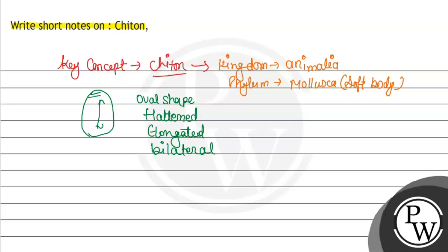This is a bilateral symmetry. On the top, it is a dorsal shell. Like a snail, it is a dorsal shell that is made by calcareous plate. So it is hard. This is the shape.